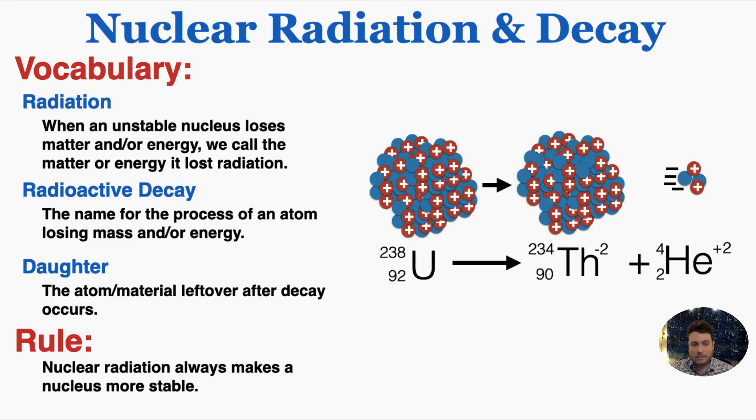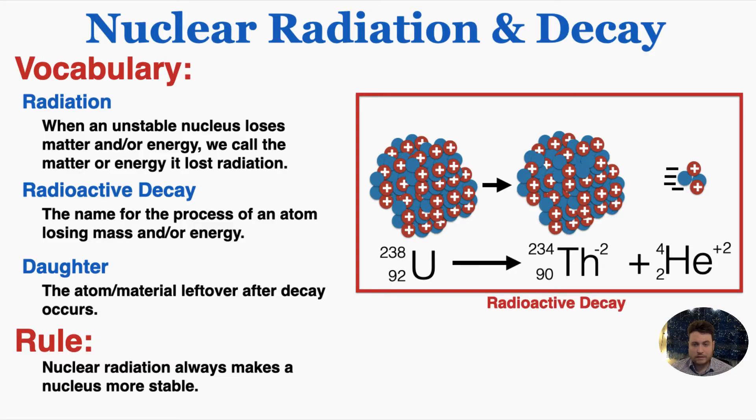We call the atom or material left over after decay the daughter of the initial atom. As an example, uranium is decaying into thorium and emitting a helium atom in this nuclear equation. This whole process is called radioactive decay, the particle emitted is called radiation, and the part that's left over is called the daughter.